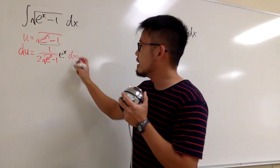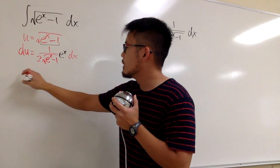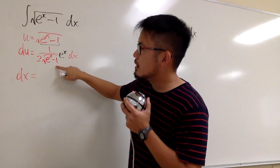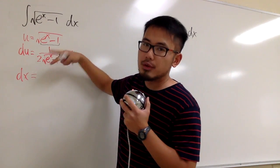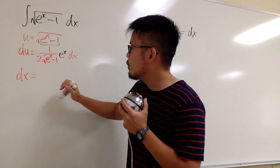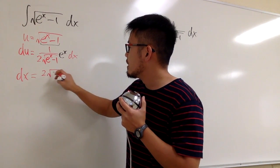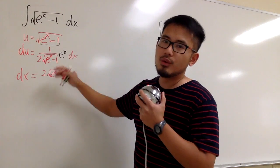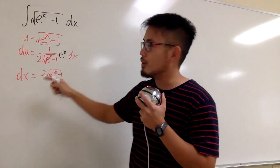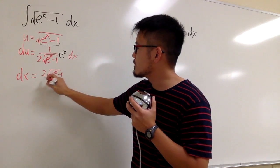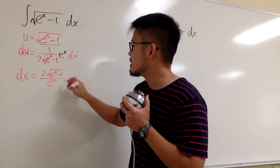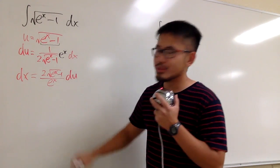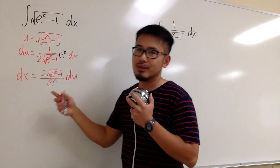Now isolate dx. This term is in the denominator, so we multiply by the reciprocal. That brings it to the numerator, and e to the x goes to the denominator. We get dx equals 2 times the square root of e to the x minus 1, over e to the x, times du.